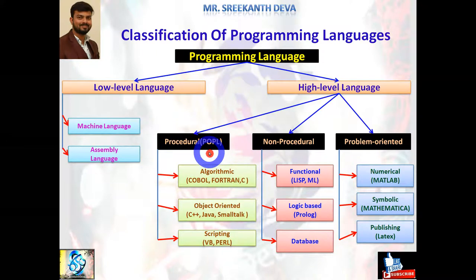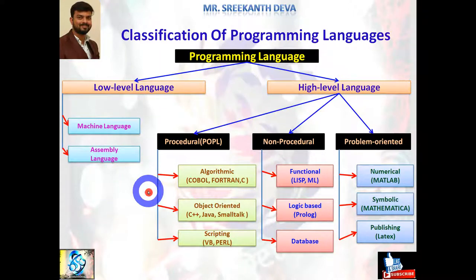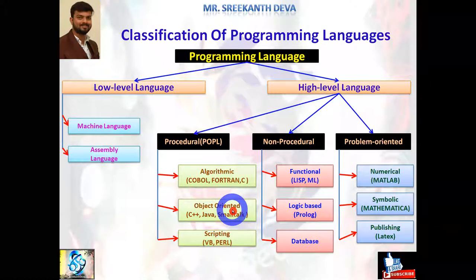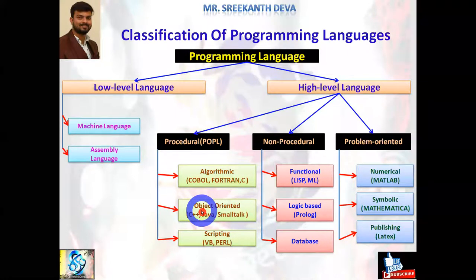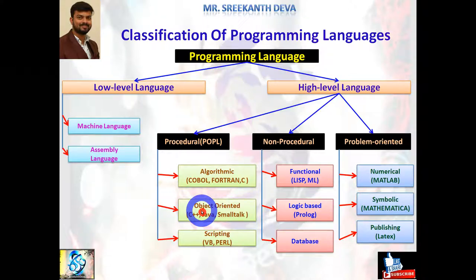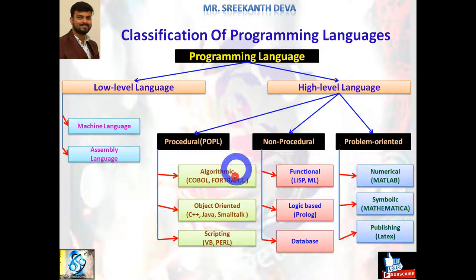Remember: C is a structural oriented programming language and a procedural oriented programming language. C uses a top-to-bottom approach, executing instructions step by step. But C++ and Java use a bottom-to-top approach. A language is object oriented only when it supports concepts like class, object, data abstraction, encapsulation, inheritance, polymorphism, reusable code, and message communication. C is not object oriented — C is only procedural oriented, algorithmic oriented, and structural oriented.